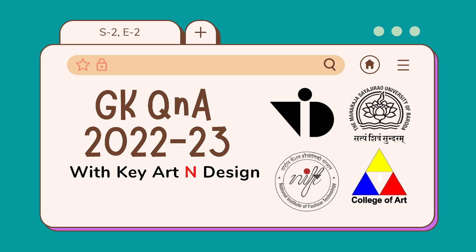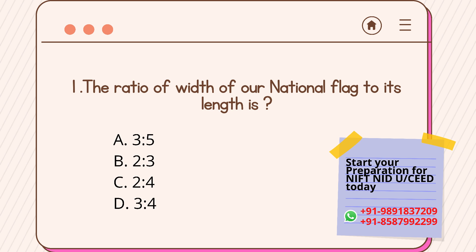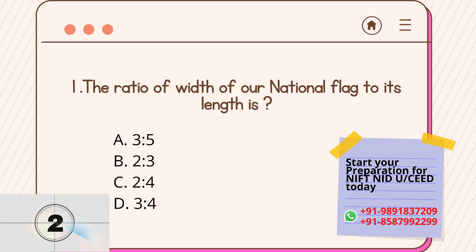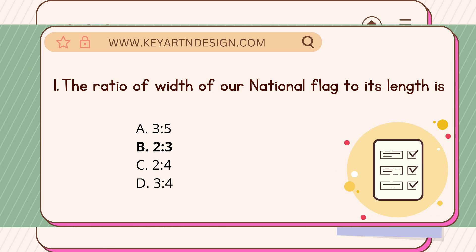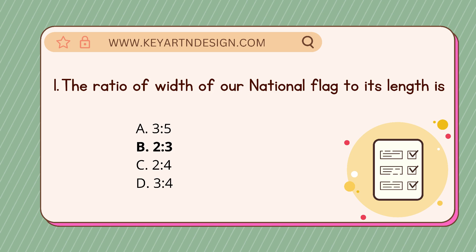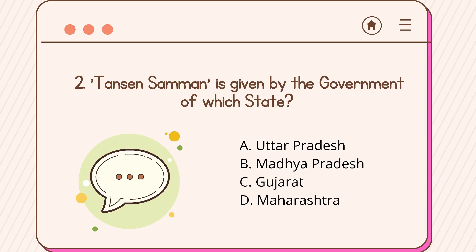Hello everyone and welcome to our channel Key Art and Design. This is the second episode of GK Questions and Answers 2022. Question number one: what is the ratio of width of a national flag to its length? Option A: three is to five, Option B: two is to three, Option C: two is to four, Option D: three is to four. The correct answer is Option B, two is to three.